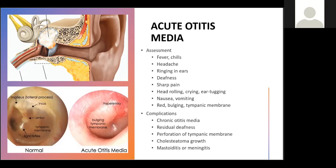In patients with acute otitis media — especially children — you will see fussiness and intense crying in infants due to pain. There will be fever, chills, headaches, ringing in the ear (tinnitus), possible deafness, and sharp pain. In children specifically, watch for ear tugging or head rolling because they can't identify the source of pain. There can also be nausea, vomiting, and a red bulging tympanic membrane.